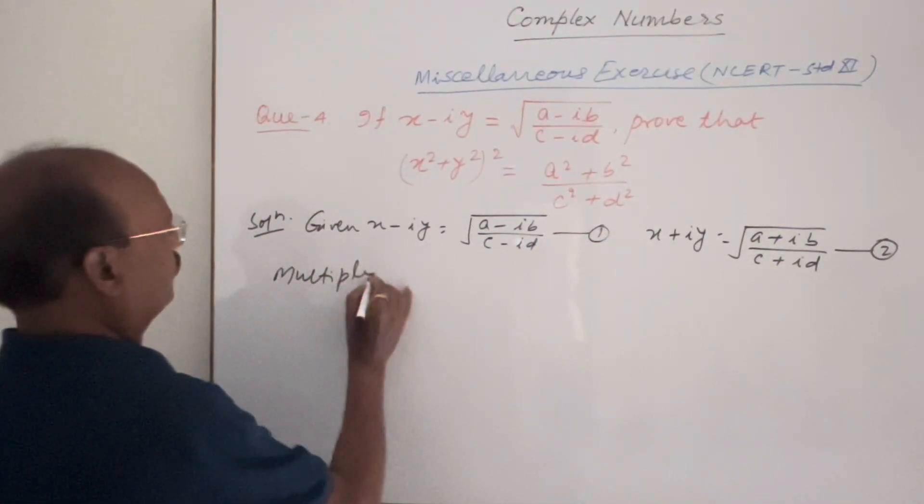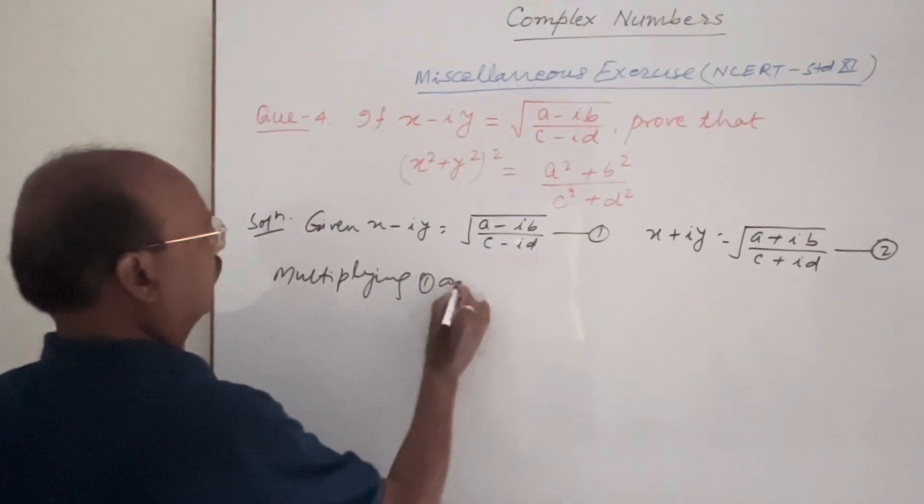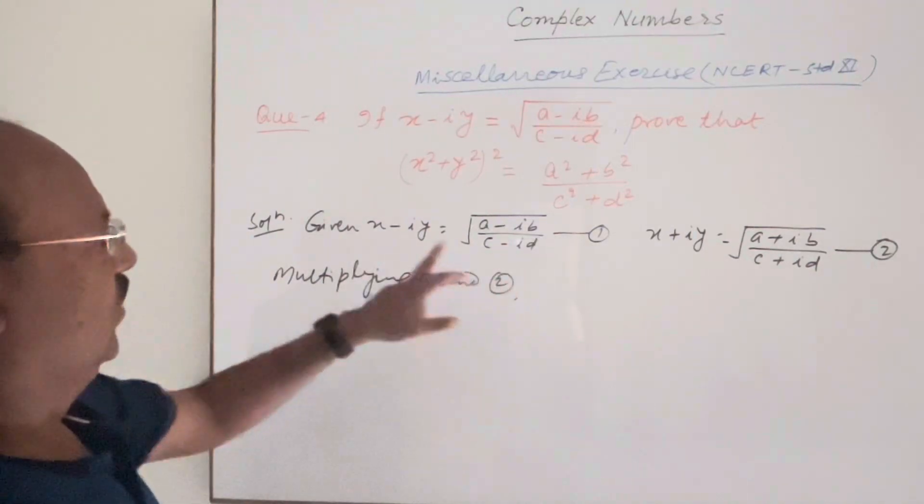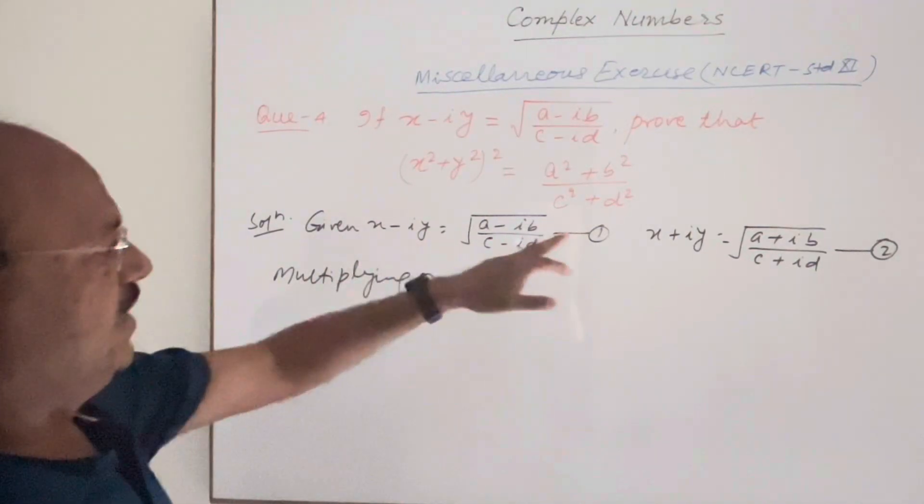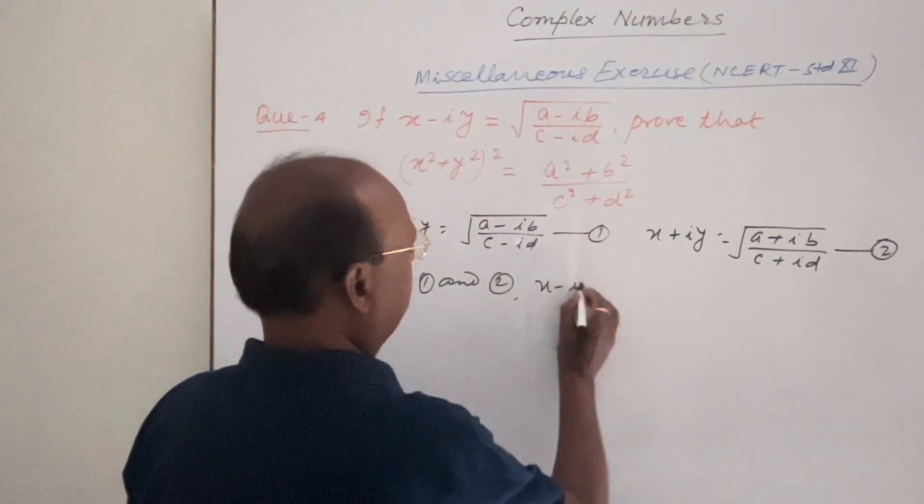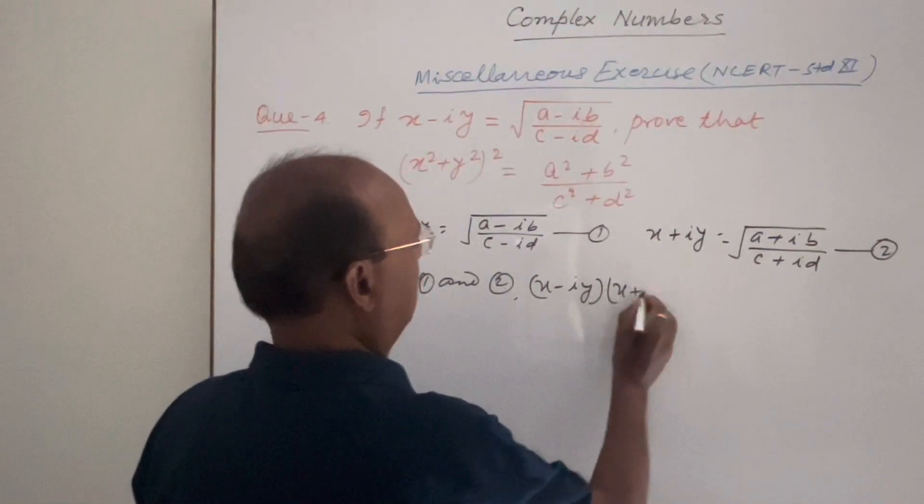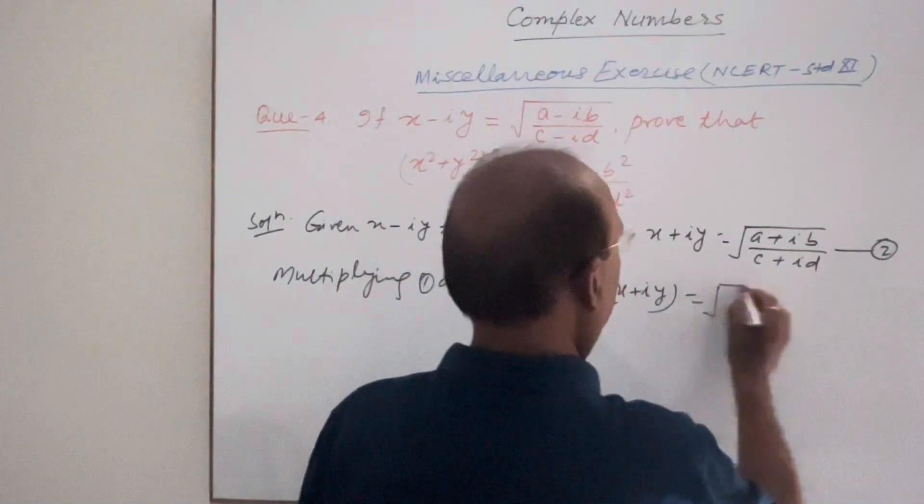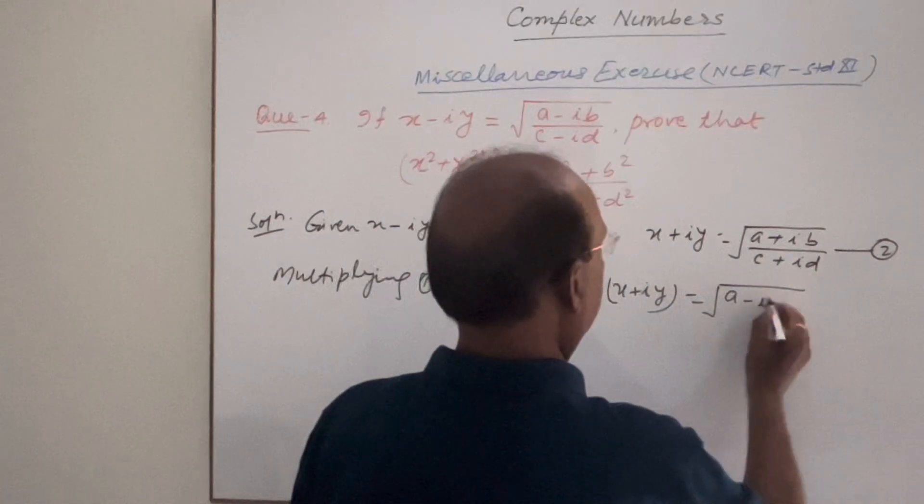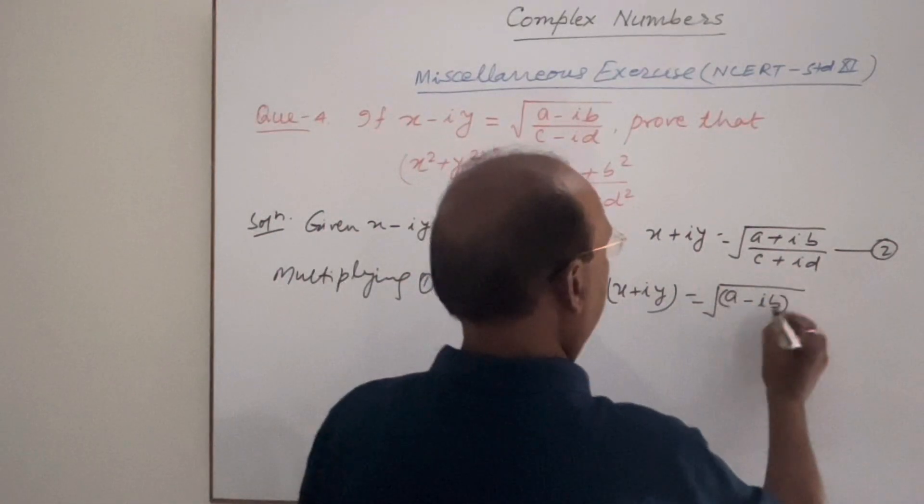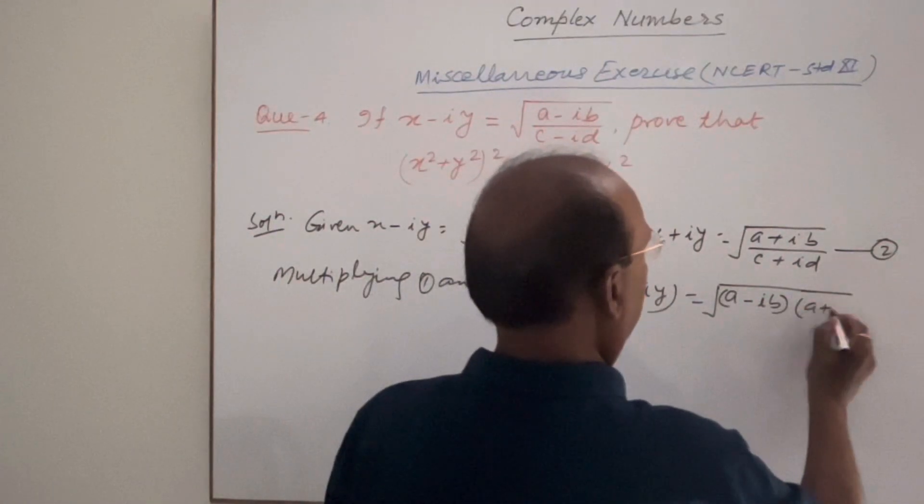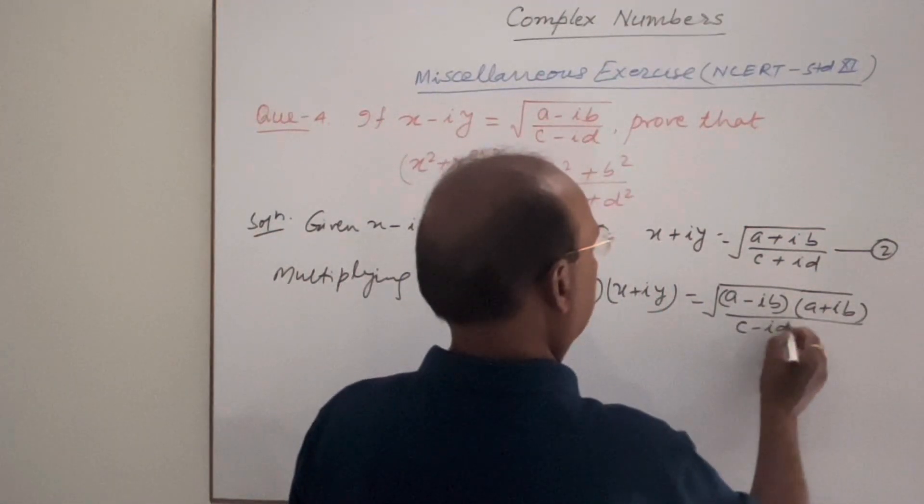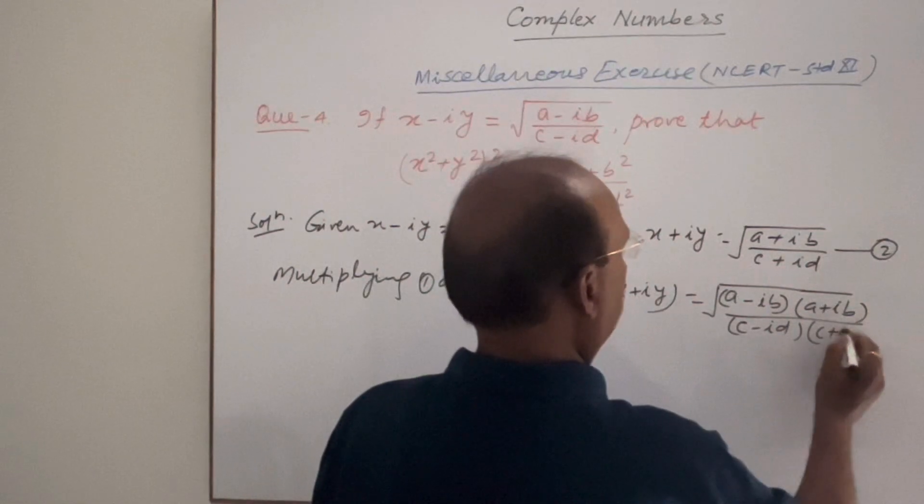We will multiply corresponding sides here. In left hand side this is x minus iy into x plus iy, and in right hand side this is root over a minus ib into a plus ib upon c minus id into c plus id.